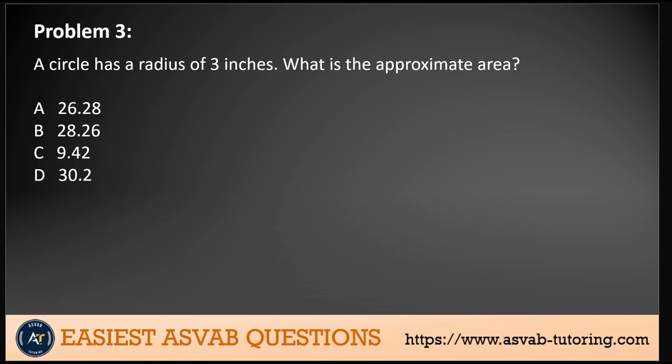Problem 3: We have a circle with a radius of three inches. We need to find the approximate area, so we can take pi to equal 3.14. Using the formula, we have pi multiplied by r squared, which is 3.14 multiplied by 3 inches squared, which equals 28.26 square inches. So there we have it, 28.26 square inches.